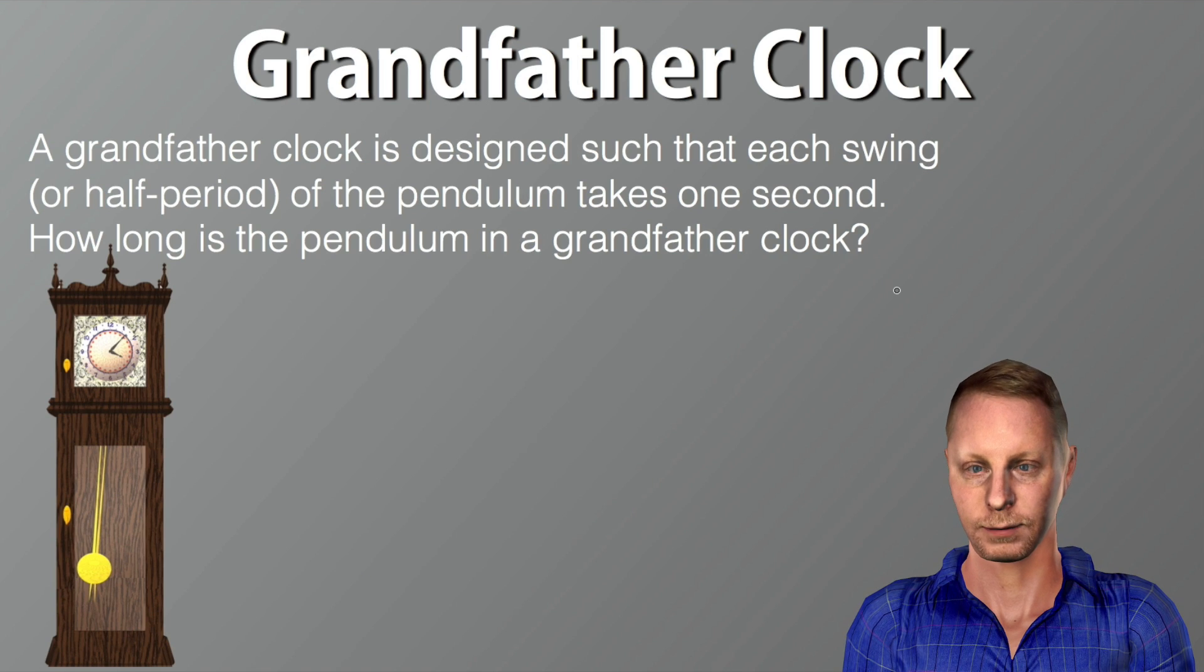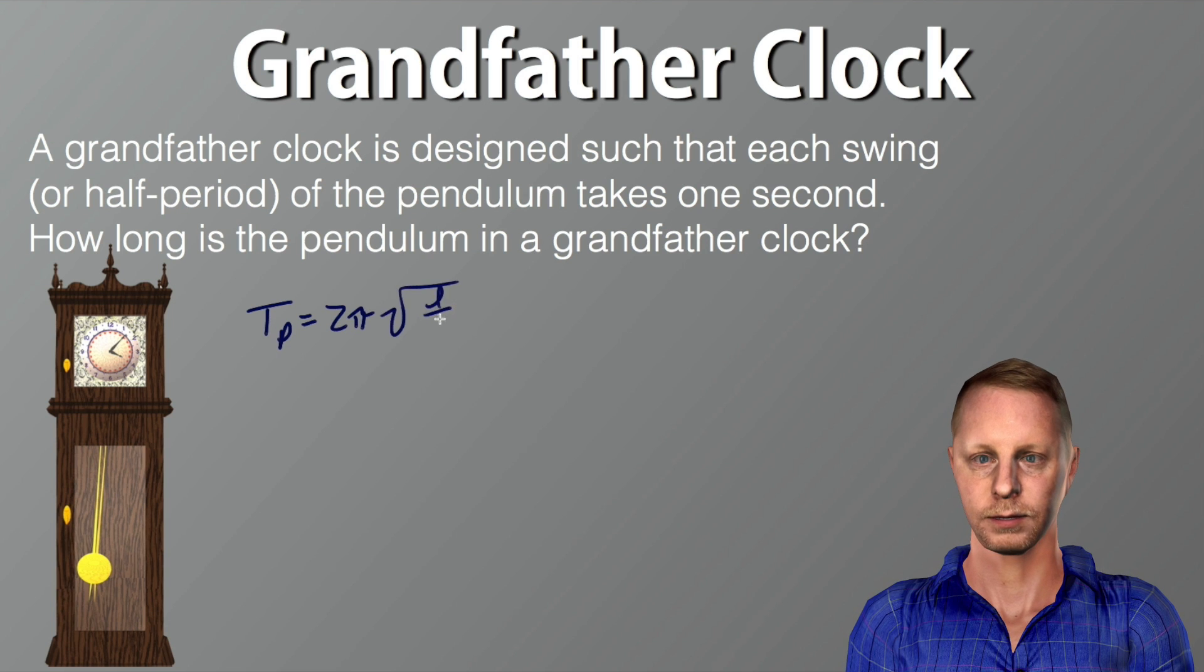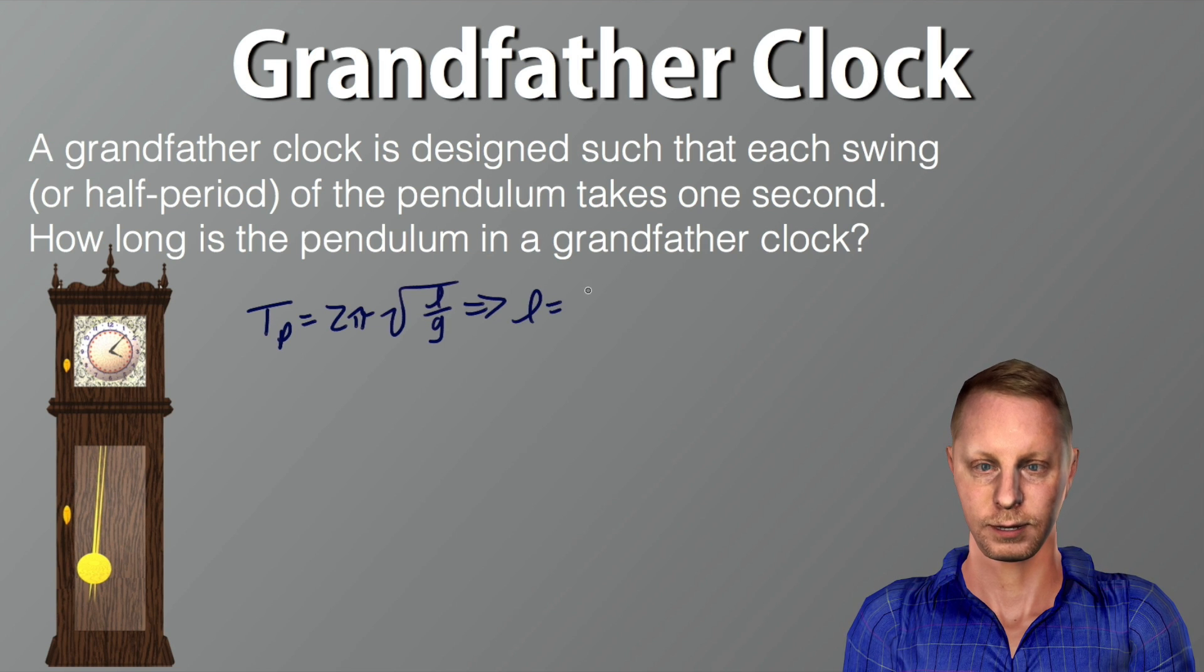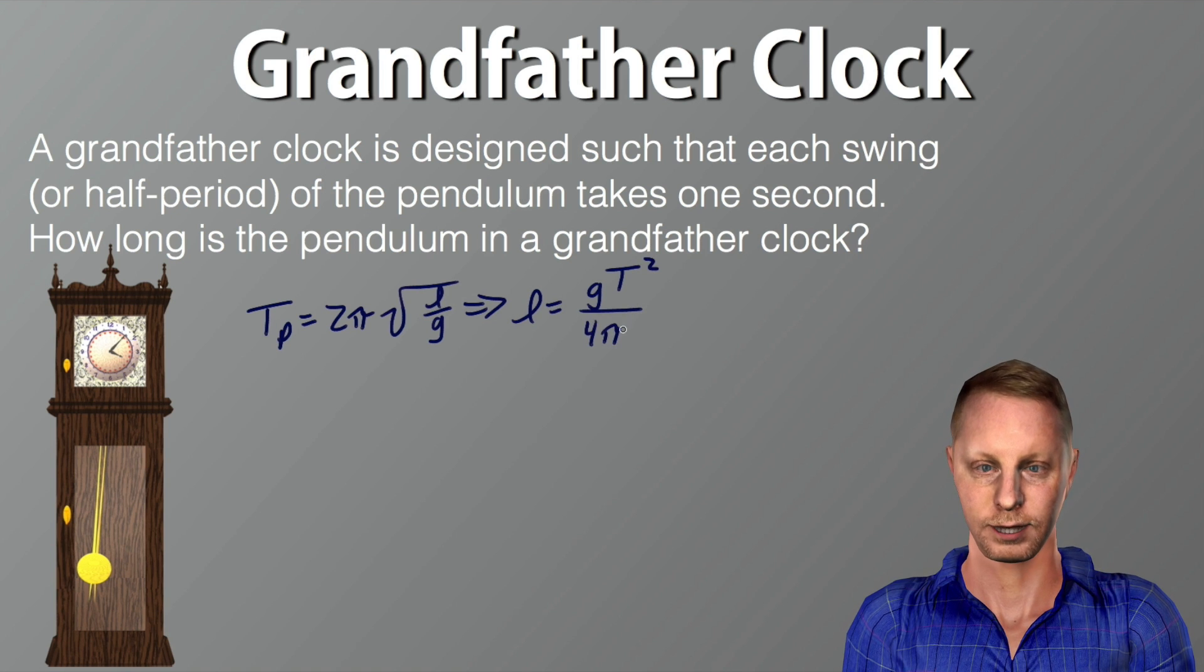Let's take the example of a grandfather clock. A grandfather clock is designed so that each swing or half period of the pendulum takes one second. How long is the pendulum in a grandfather clock? Well, the period of a pendulum is 2π square root l over g, which implies then that the length, if we solve for l, is going to end up being g times the period squared divided by 4π squared.